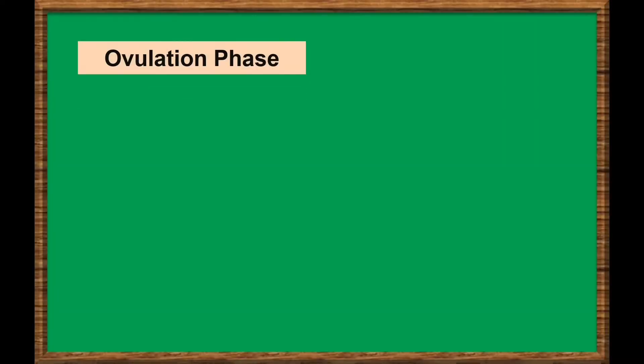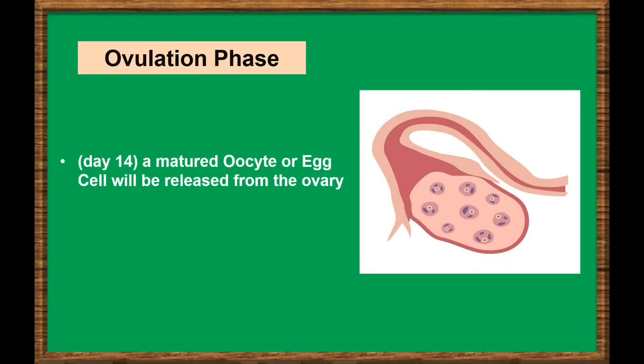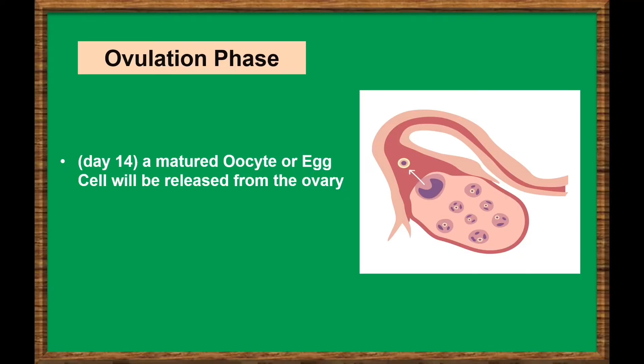By the middle of the menstrual cycle, around day 14, the remaining mature follicle releases its matured oocyte, or egg cell, from the ovary in the process of ovulation.